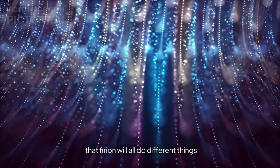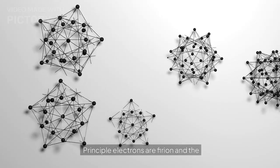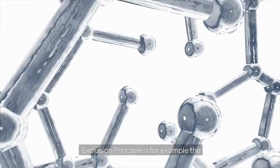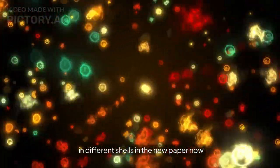But fermions won't do that. Fermions will all do different things and space out. It's called the exclusion principle. Electrons are fermions and the exclusion principle is, for example, the reason why they sit around atomic nuclei in different shells.